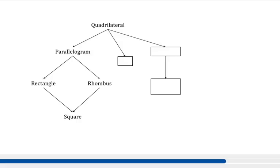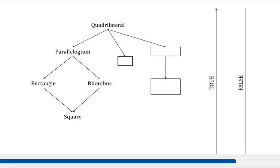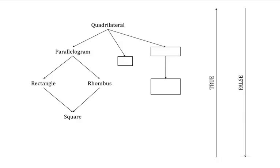On your homeworks, quizzes, and tests, you will be answering true/false questions, and this flow chart can help you. Draw an arrow starting at the bottom of the flow chart going up, and label it as true. Then draw the opposite — an arrow starting at the top going down — and label it as false. This is your key to solving the true/false questions. They will give you a property and a shape: if you circle the shape and draw an arrow to the shape that the property applies to and it goes up, the answer is true. If the property belongs to a shape below it, the answer is false.